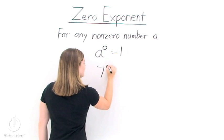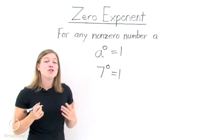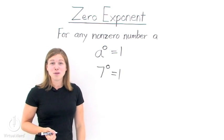So if you pick seven, for instance, and put that to the zero power, that equals one. If you chose x and put that to the zero power, that equals one, too.